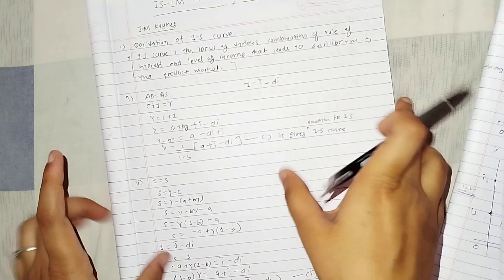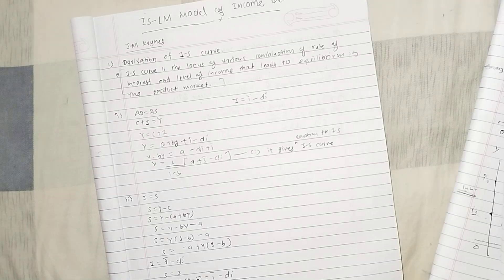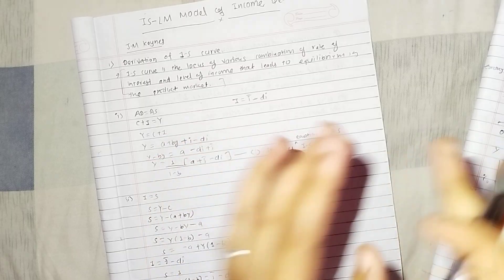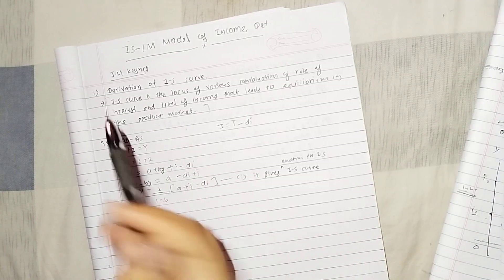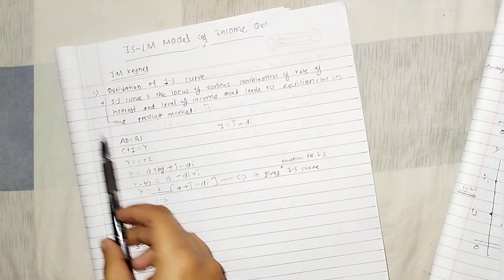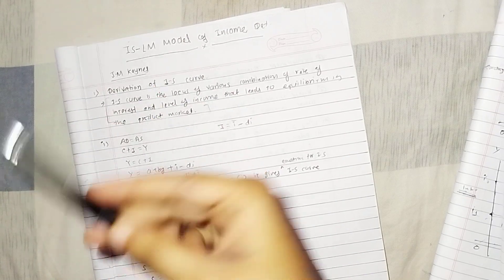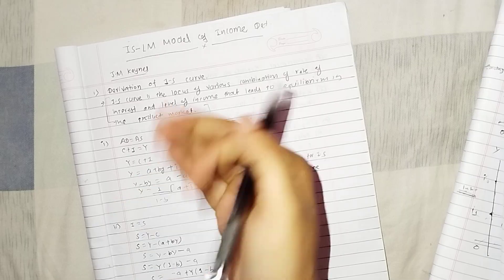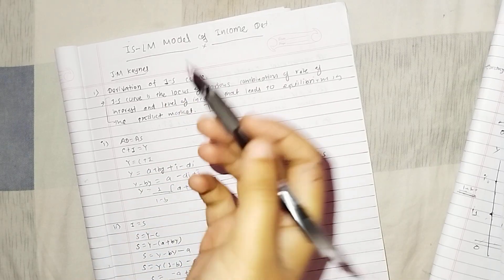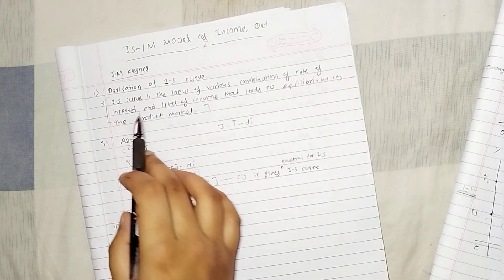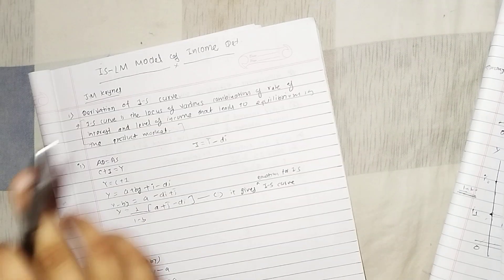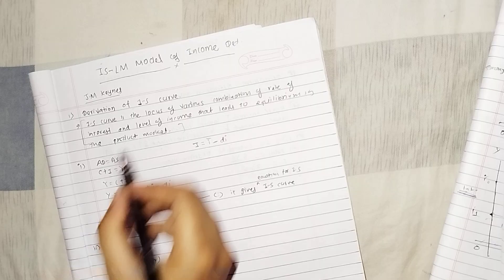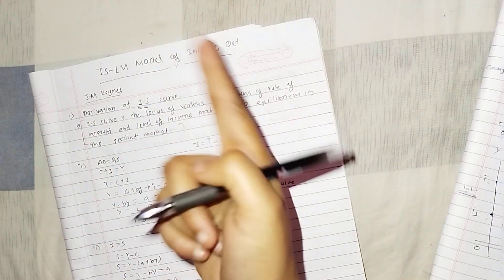The IS curve is what we will know first. IS curve is the Investment Saving curve. According to J.R. Hicks and Alvin Hansen, the IS curve is the locus of various combinations. IS means Investment Saving curve.